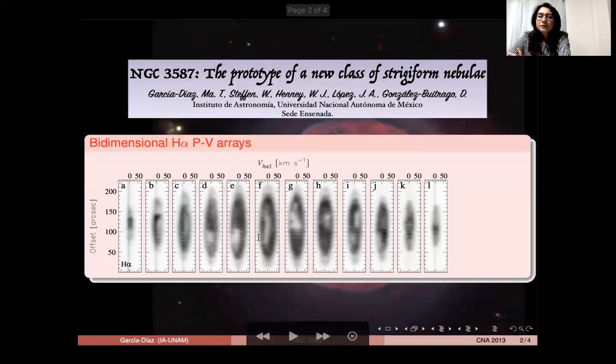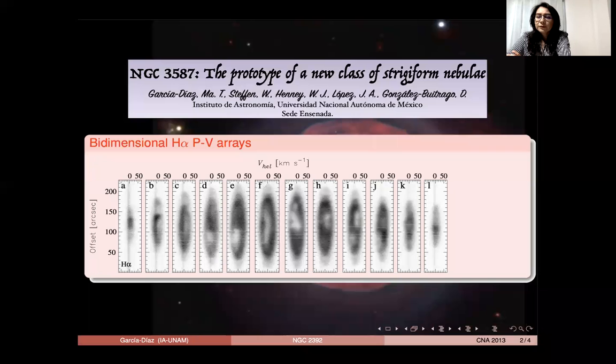This is a mosaic of observed H-alpha bidimensional PV arrays labeled according to slit position. The top of each PV array corresponds to the east side of the nebula.